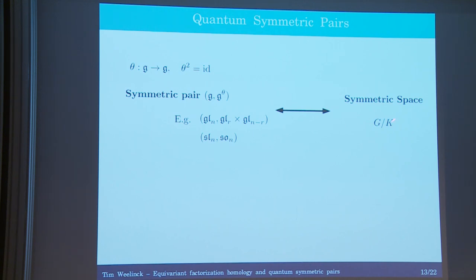Think of g-theta as the complexified Lie algebra of K, and g as the complexified Lie algebra of G. People were interested in studying quantum symmetric spaces but didn't know how to define those, so a natural idea was to try and quantize this infinitesimal data because the quantum group was well known. The question becomes: how does one quantize that sub-Lie algebra?